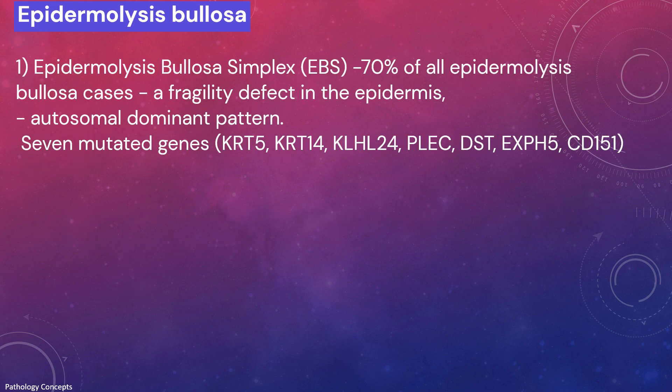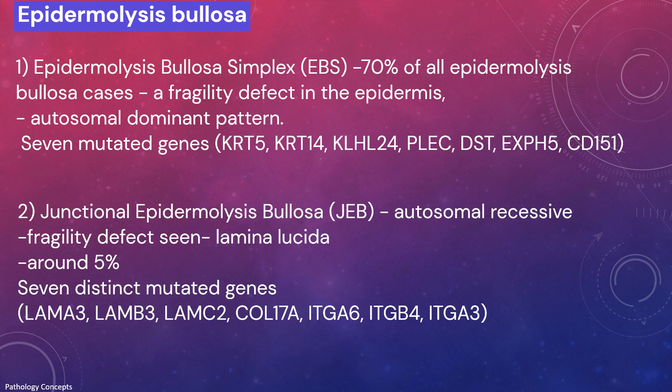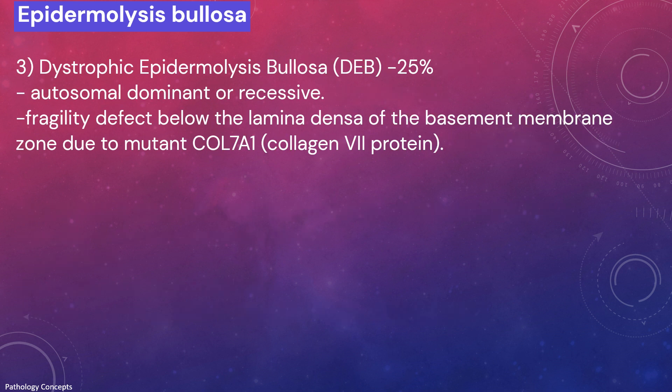There are four major groups of epidermolysis bullosa. First, epidermolysis bullosa simplex (EBS) comprises 70% of cases, featuring a fragility defect in the epidermis, mostly inherited in an autosomal dominant pattern — seven mutated genes have been isolated. Second, junctional epidermolysis bullosa is autosomal recessive with a fragility defect specifically within the lamina lucida, making up around 5% of cases with seven distinct mutated genes identified.